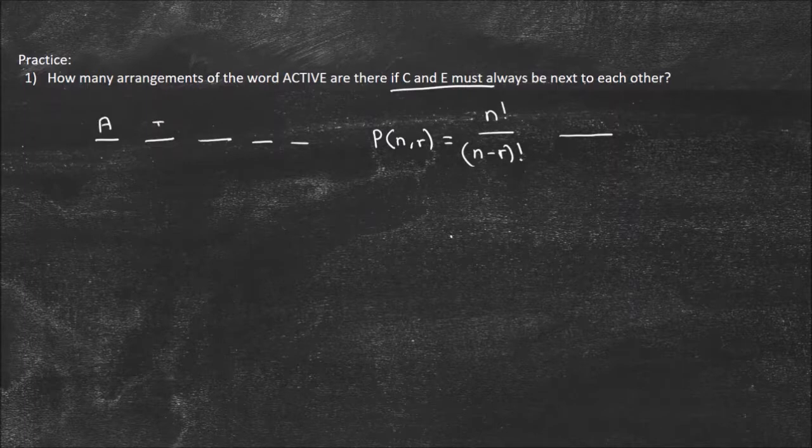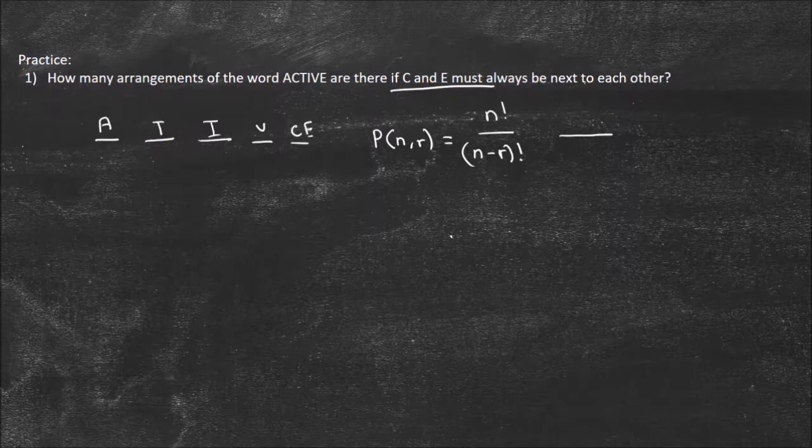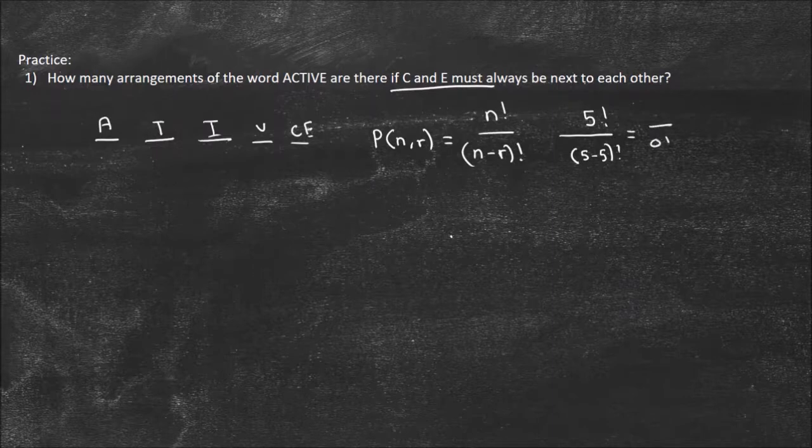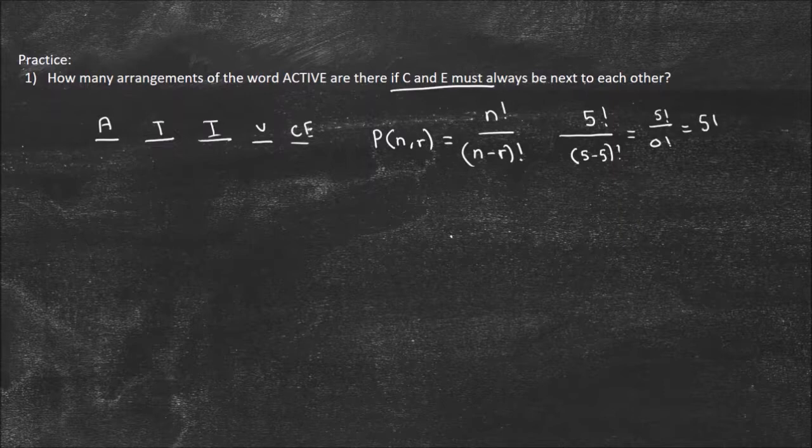You treat C and E as one letter. So it's A, T, I, V, and then CE. These are always going to be together, so you treat them as one group. We're choosing from five, and then it's five minus five factorial, so it's five factorial on the top. On the bottom we get zero factorial, which equals one. So it's five factorial divided by one, which is five factorial.